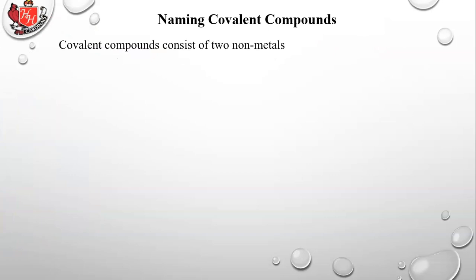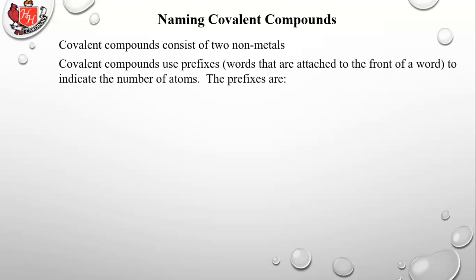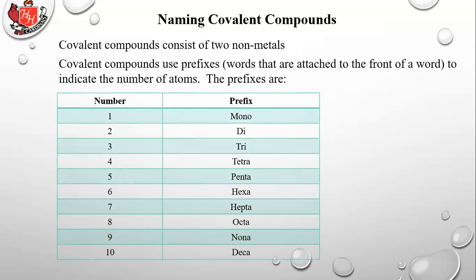Now we're going to get into naming covalent compounds. Covalent compounds consist of two nonmetals. Covalent compounds use prefixes to indicate the number of atoms. The prefixes are: one is mono, two is di, three is tri, four is tetra, five is penta, six is hexa, seven is hepta, eight is octa, nine is nona, and ten is deca.